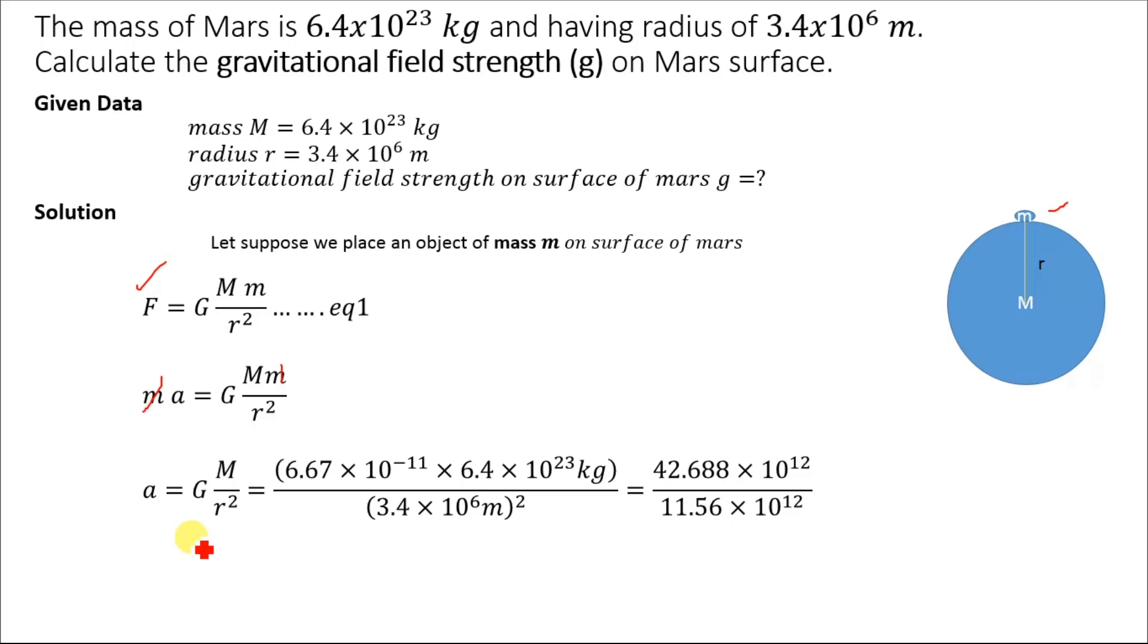We will substitute the value for capital G, which is the gravitational constant and is equal to 6.67 × 10⁻¹¹, where mass of Mars is equal to 6.4 × 10²³ kilograms, and radius of Mars is 3.4 × 10⁶ meters, whole squared.